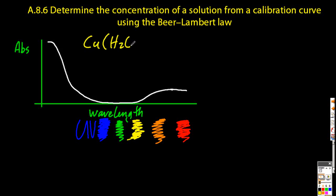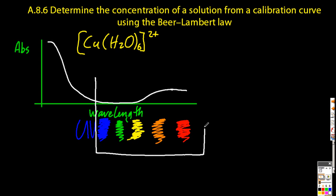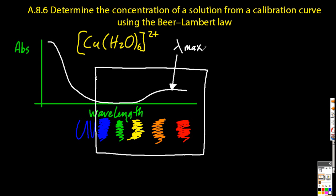So first of all, if you're going to do a calibration curve, you need to pop your chemical — in this case, copper 2+ ions in water — through a colorimeter or spectrophotometer, same kind of thing, and find out the maximum absorbance: what wavelength the maximum absorbance occurs at. Looking at the absorbance in the visible range, the maximum is a kind of orangey-red, so that's called lambda max, at about 700 nanometers.